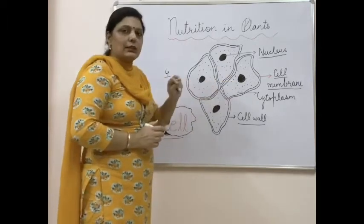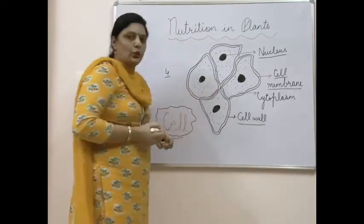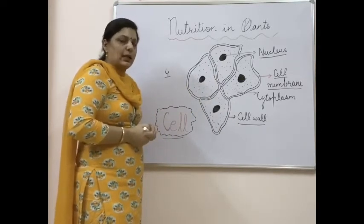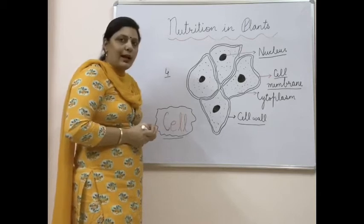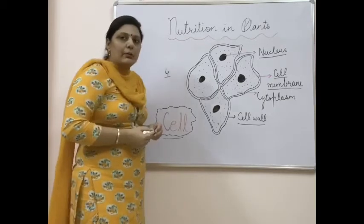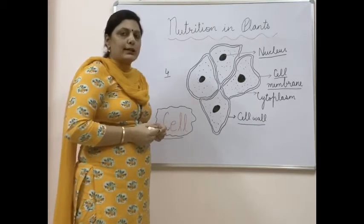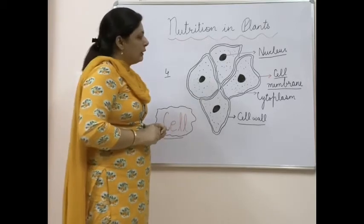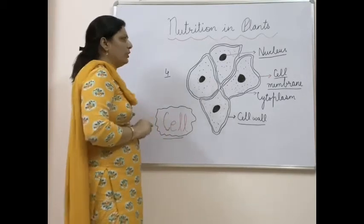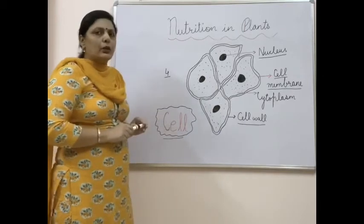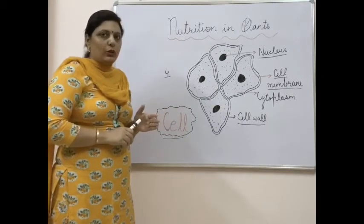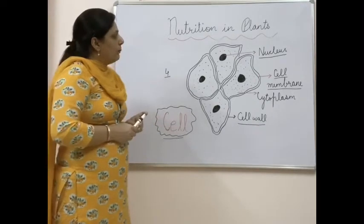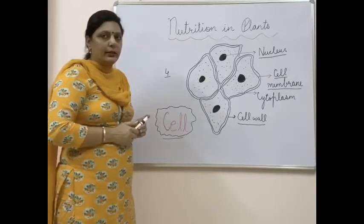Nucleus and cytoplasm are present in all cells, but cell wall is present only in plant cells and is not found in animal cells. In this chapter, the diagram given is of a plant cell, which is why it shows a double boundary — the outer boundary is the cell wall. Practice this diagram and understand it properly, because until you know the base of a living organism, you won't be able to understand what comes next.